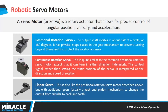The second type is the continuous rotation servo. It is the same as the positional rotation servo except it can turn in either direction indefinitely — clockwise and anticlockwise — at varying speeds depending on the command signal. Finally, the linear servo will move back and forth. Otherwise, everything else is the same as the positional and continuous rotation servos.